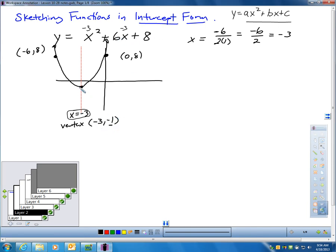And there's my vertex, negative 3, negative 1. We would sketch that. And then we would notice that my y-intercept is 8. Y-intercept is 8, which means 0, 8 is one of the points on my graph.